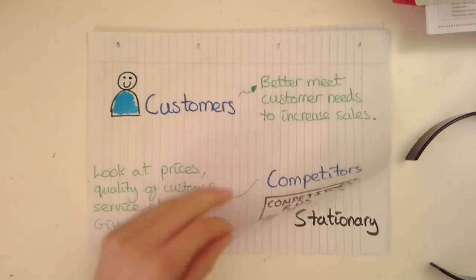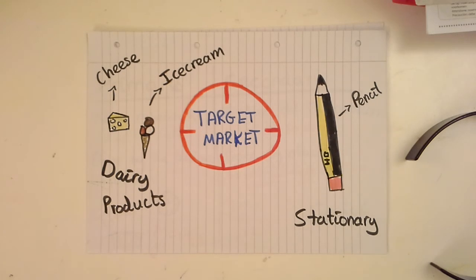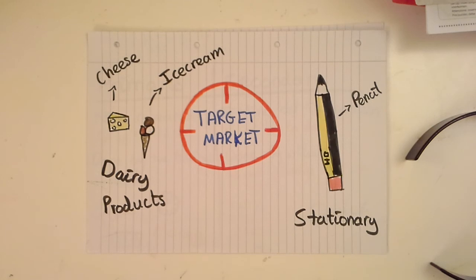We've also got to look at our target market. If we produce dairy products like cheese or ice cream, then researching the stationery market isn't going to help us at all — unless we're looking at expanding into that market, in which case it becomes one of our target markets. We're targeting people within a market and trying to do research about them so that possibly we can sell to them.